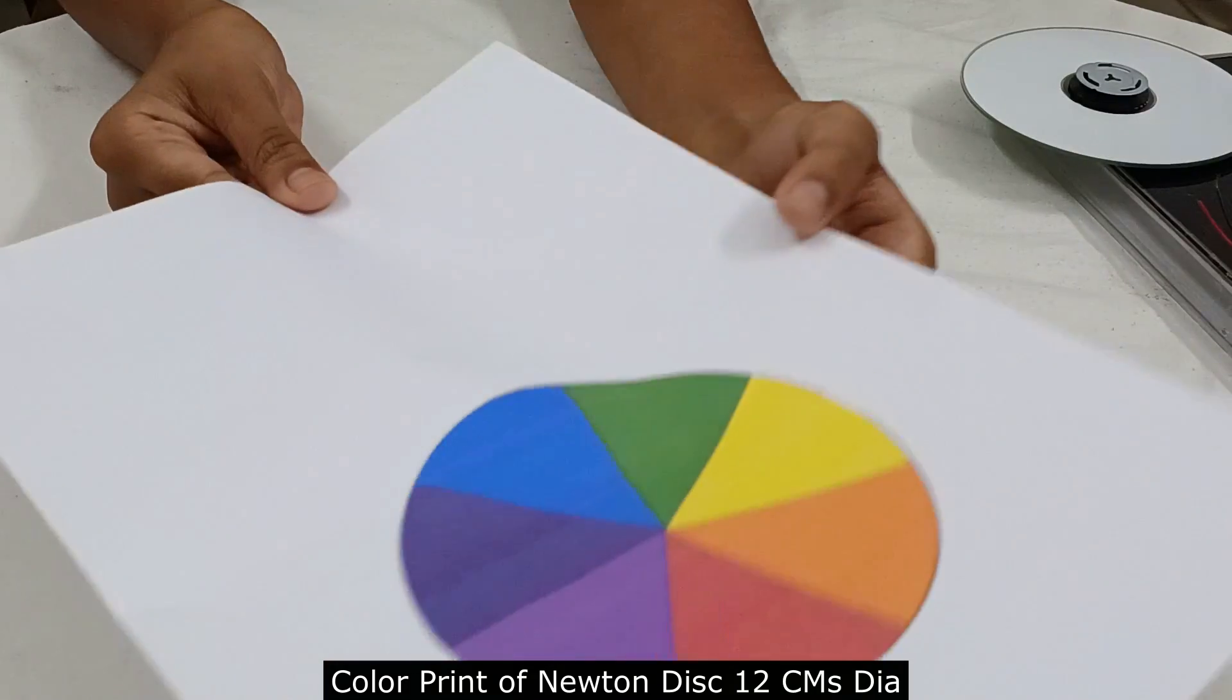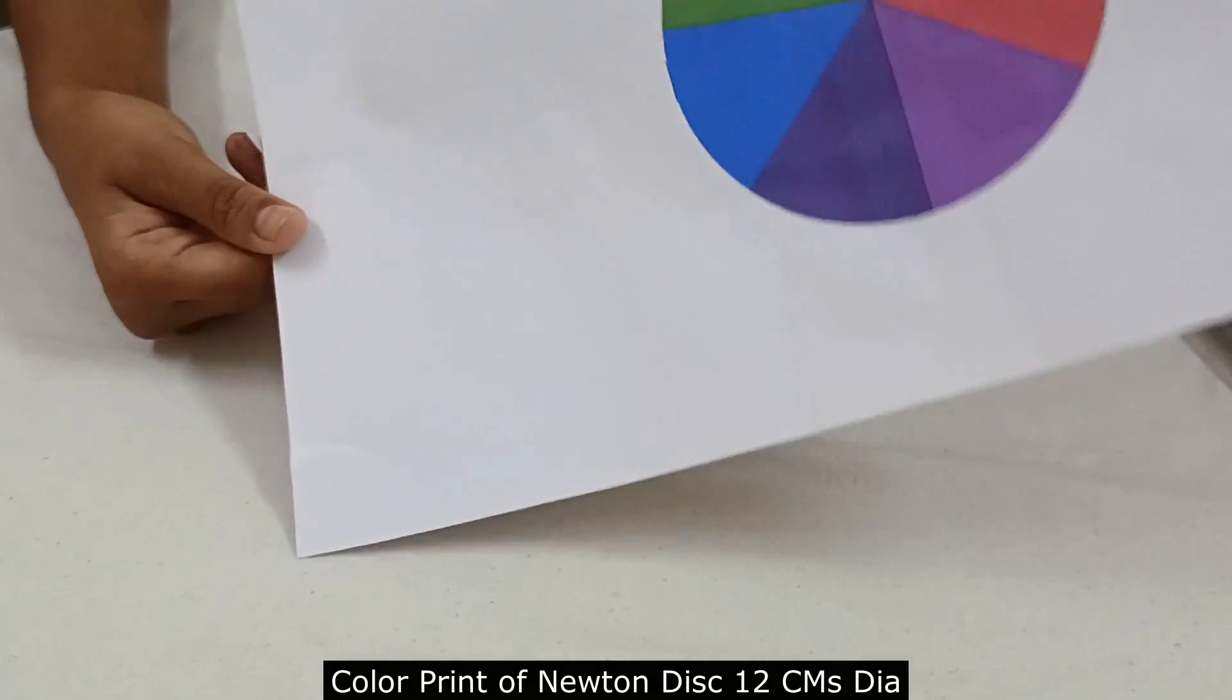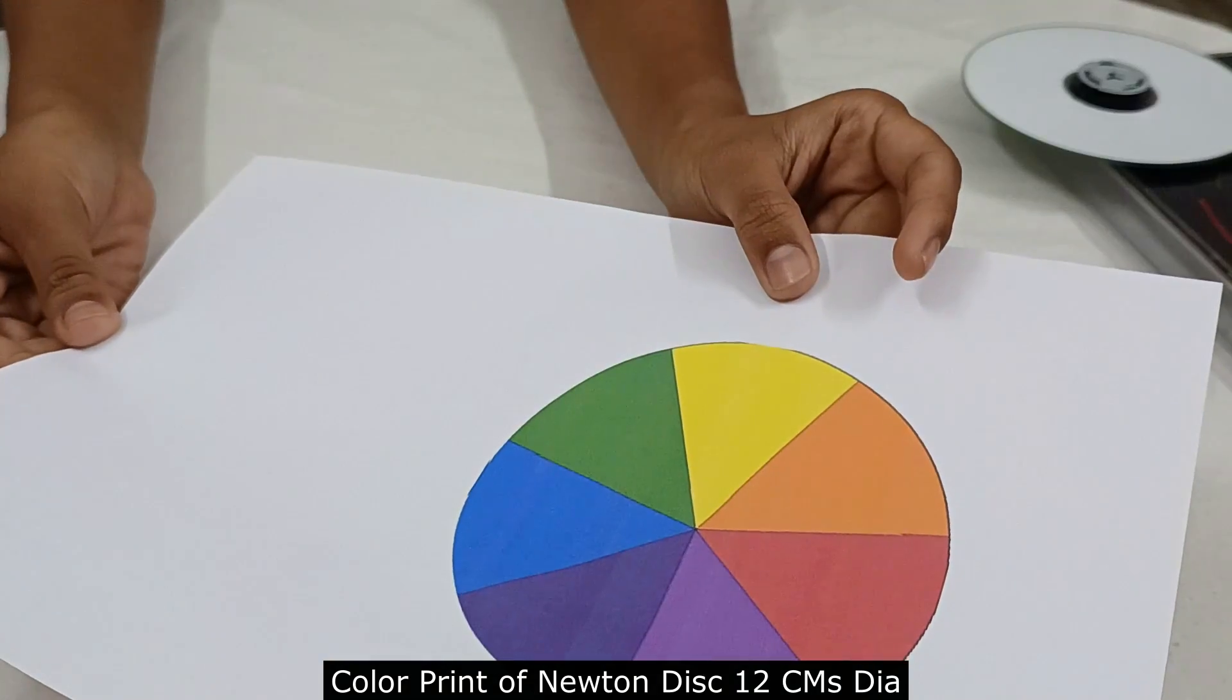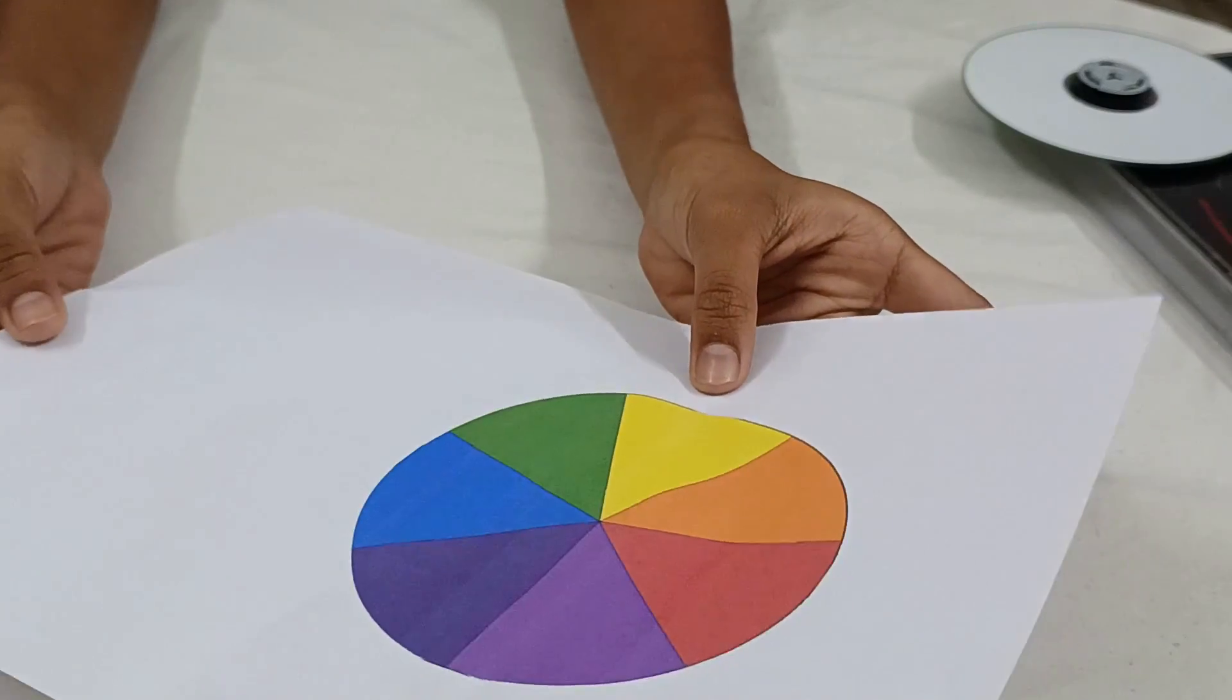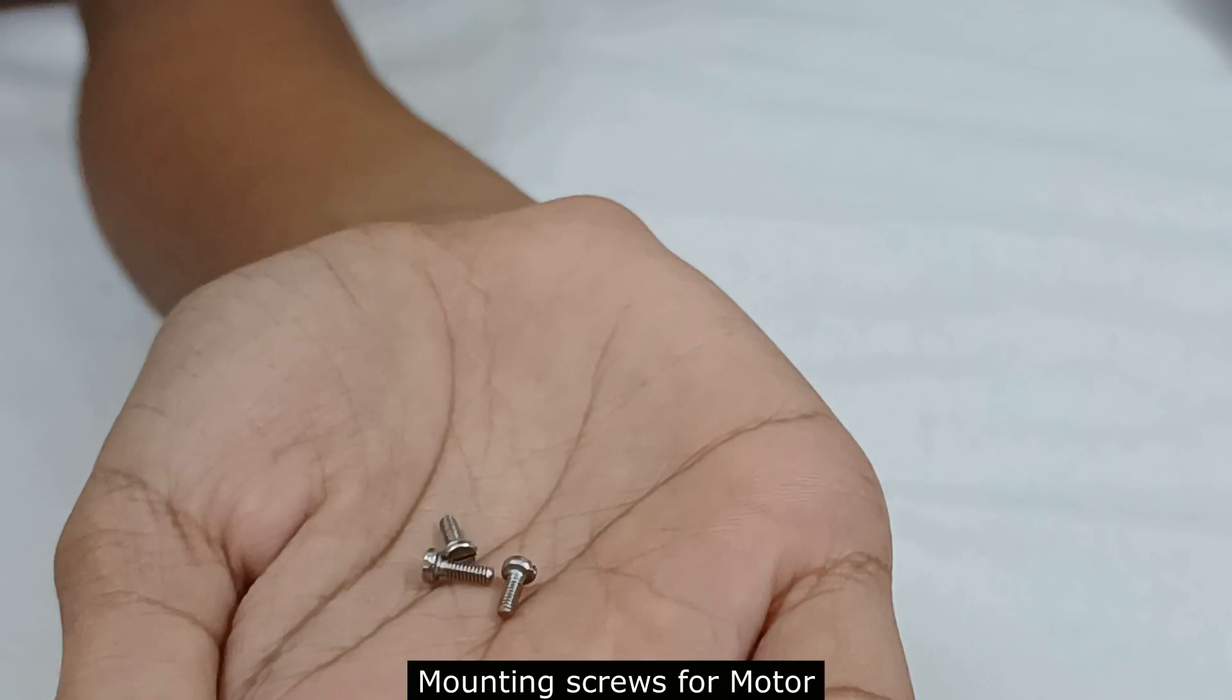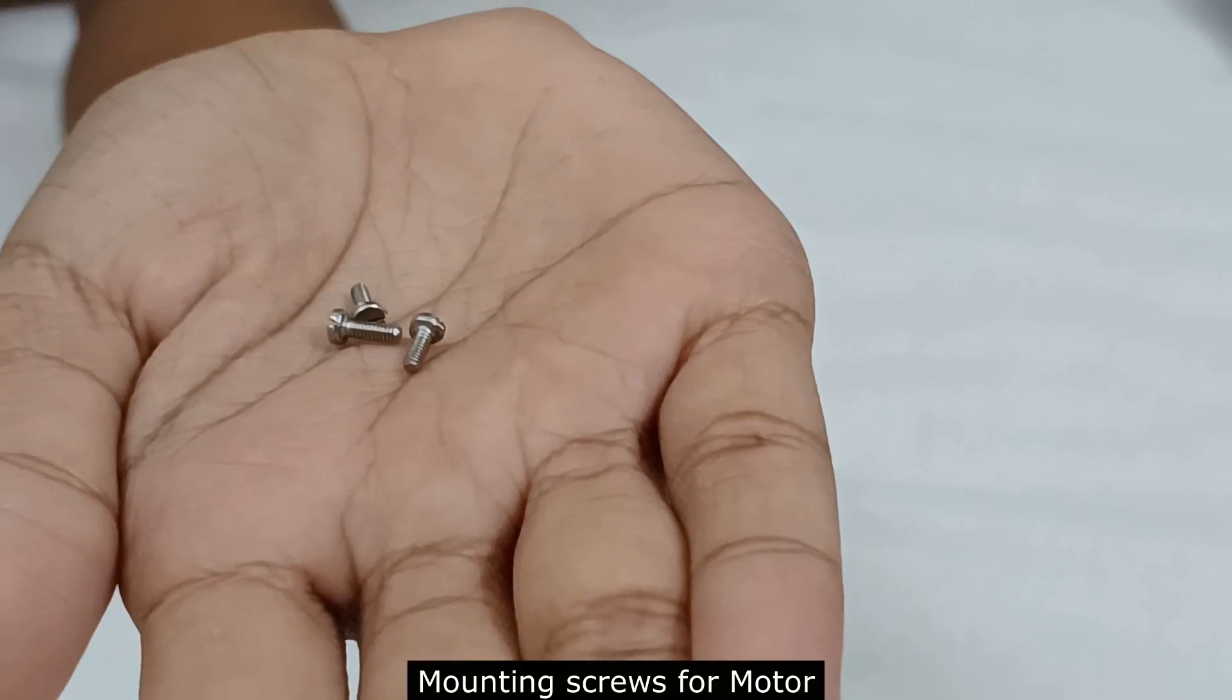Next we need a printout of Newton's disc. Later we will stick it on the CD. Next we need three screws to fit the motor in the box. Now let's start.